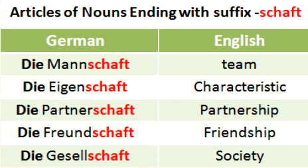The last example is 'Gesellschaft,' which means 'society.' This is again a feminine noun and takes the article 'die.' So every time you come across a noun ending with the suffix '-schaft,' it will be a feminine noun and we will always use the article 'die.'